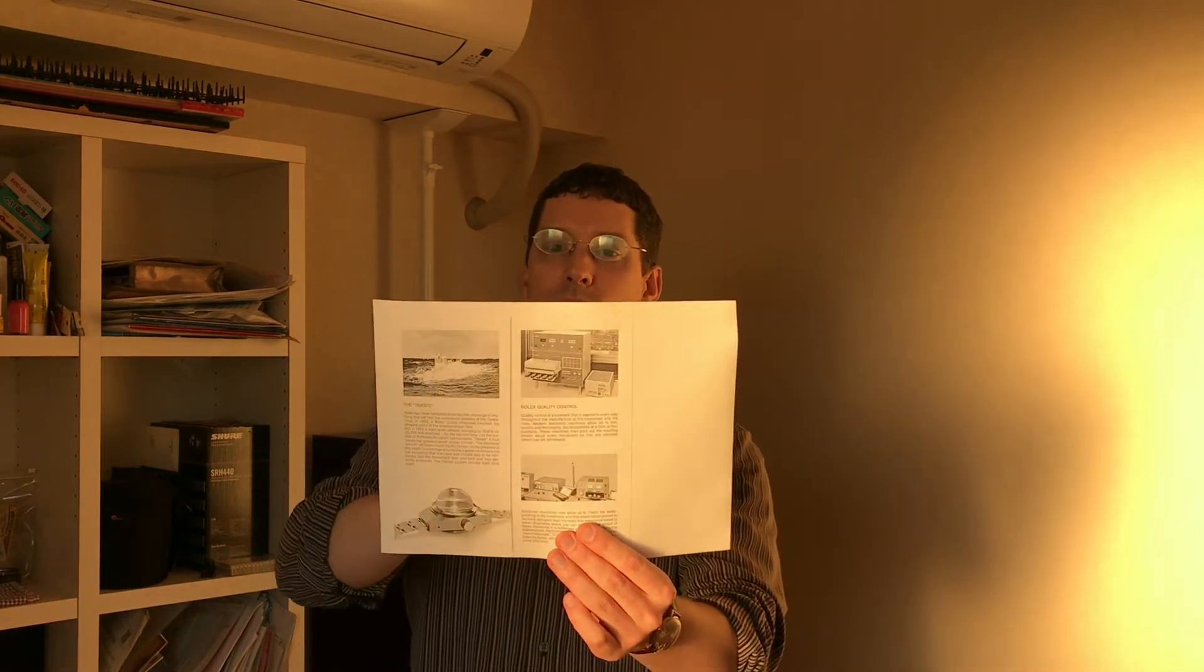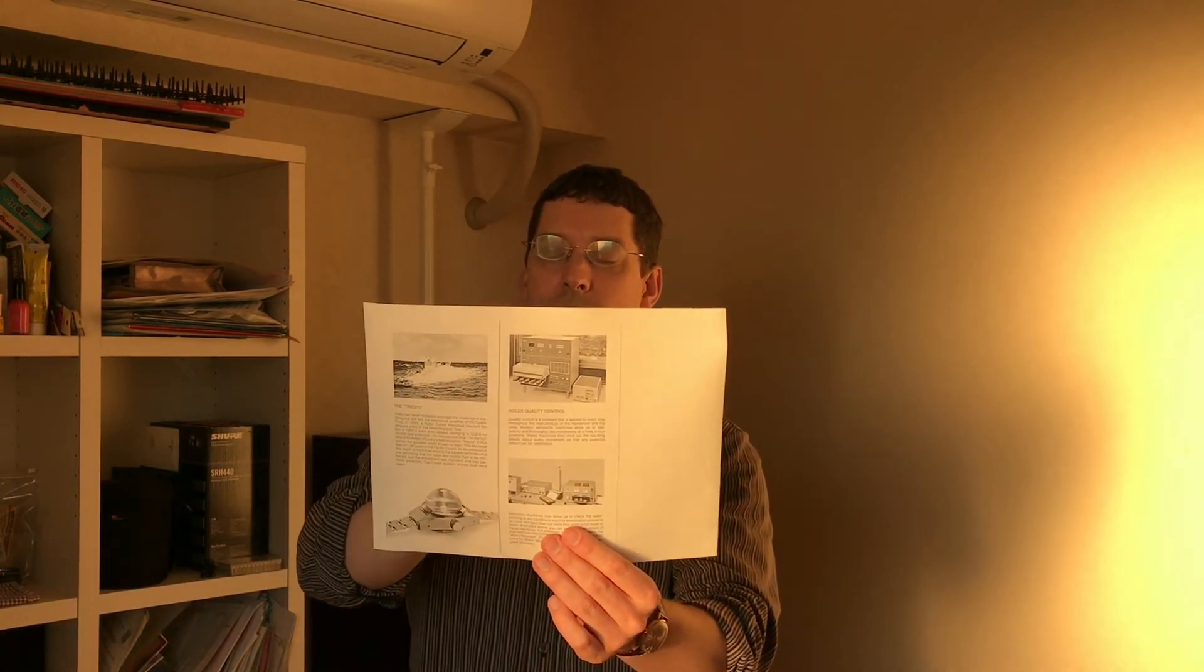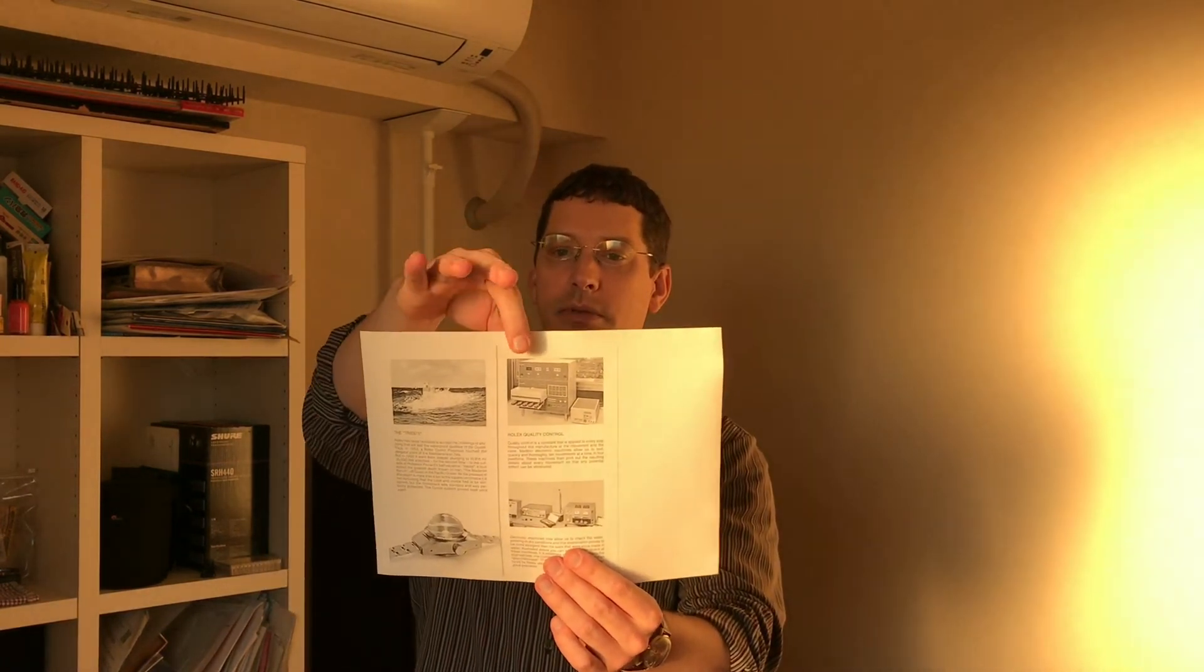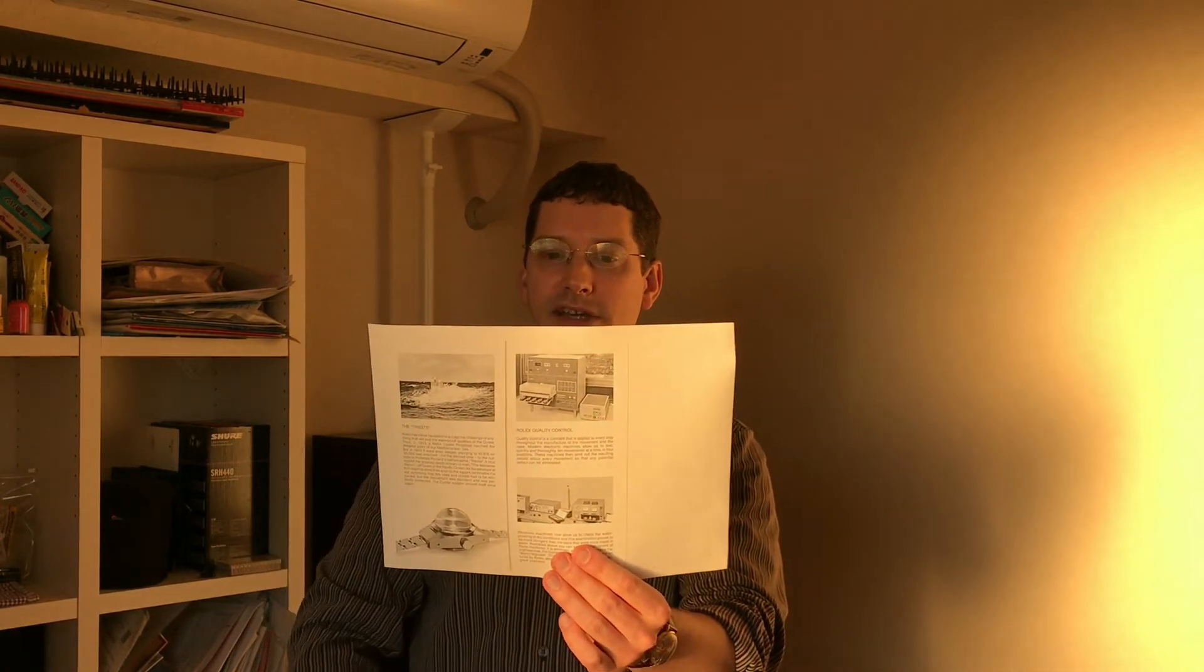And you can rest assured that 30 years since they've come up with probably a more advanced system to test and control the accuracy of the watches. Electronic machines now allow us to check the waterproofing in dry conditions, and this examination proves to be more stringent than the tests that were once made in water.